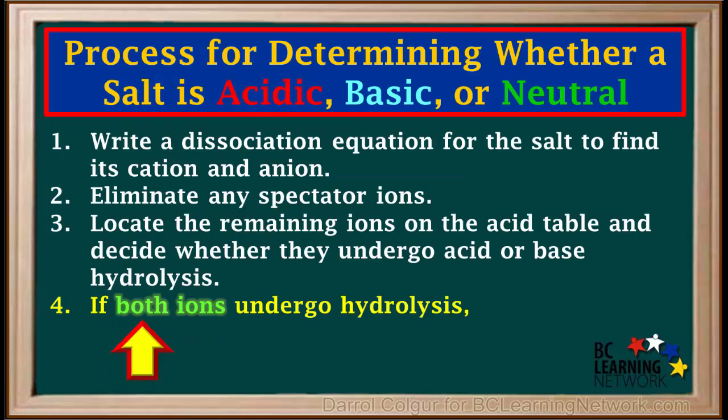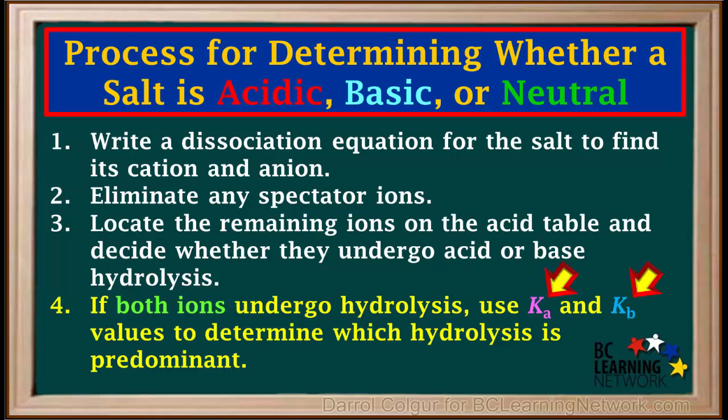The fourth step of our process comes into play in cases where both the cation and anion of the salt hydrolyze. If both the cation and anion hydrolyze, we compare the value of the Ka for the cation to the value of Kb for the anion in order to decide which hydrolysis is predominant. We'll go through an example of this later.